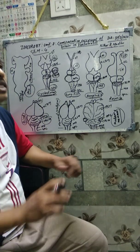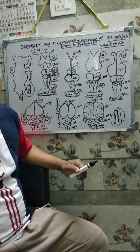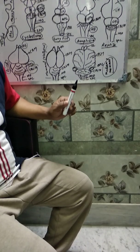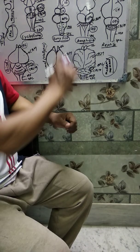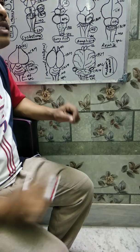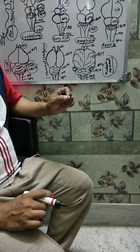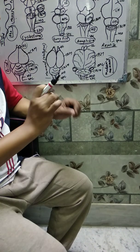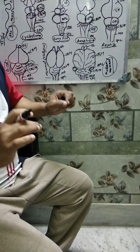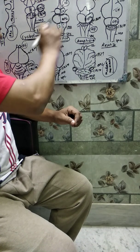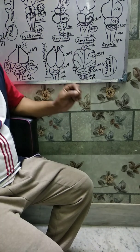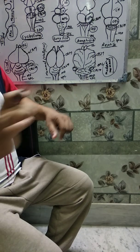Moving to fishes — there are two types: Elasmobranchii (cartilaginous) and Osteichthyes (bony fishes). In bony fishes, the olfactory lobes, cerebral hemispheres, and diencephalon are smaller than in cartilaginous fishes. In cartilaginous fishes, the cerebral hemispheres and olfactory lobes are larger than in bony fishes. The medulla oblongata is well developed with special lobes for entry of lateral line nerves.